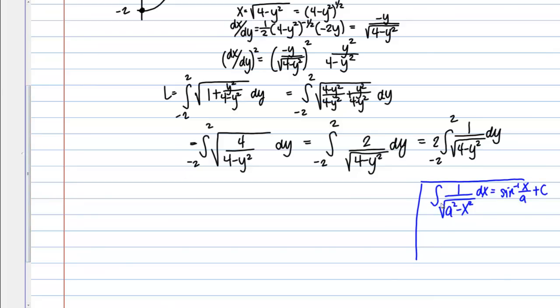Now here A just represents a constant. So we have that form, right? We have 4 which is 2 squared minus Y squared. So then if we take the anti-derivative here, I'm going to keep my 2 out front, and then I'm going to get the inverse sine of Y over 2. And I'm evaluating between negative 2 and 2.